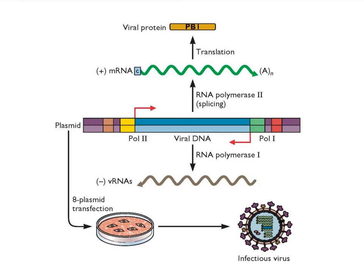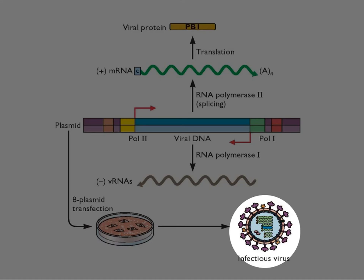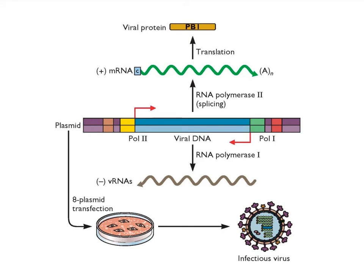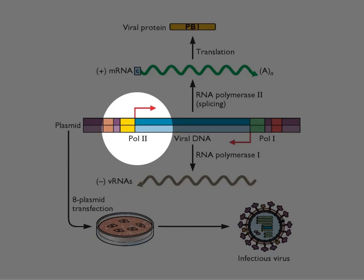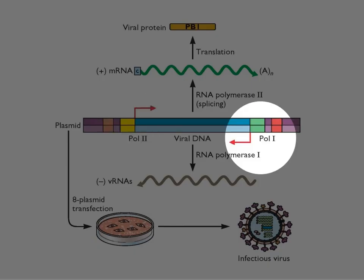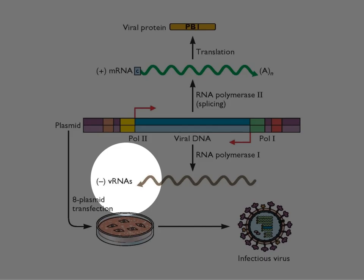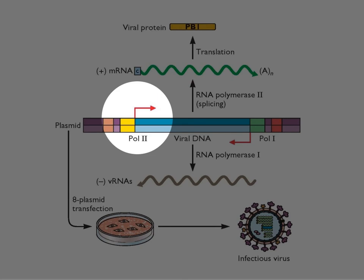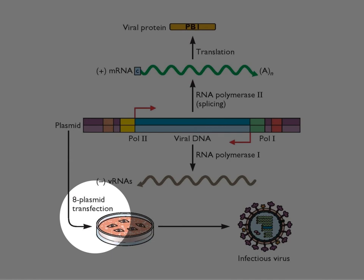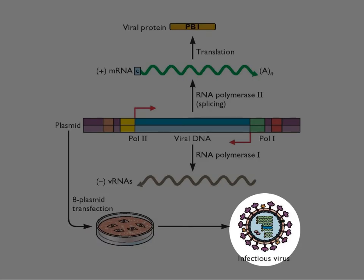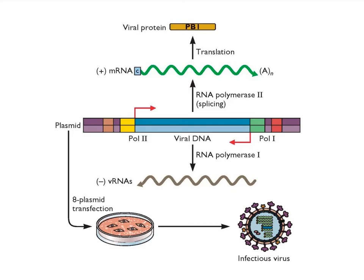For influenza virus, which has eight RNA segments, you make a plasmid for each of the eight segments. These plasmids are cleverly made with two promoters: a Pol-2 promoter going in one direction and a Pol-1 promoter going in the other. When you put this plasmid into a cell, it goes into the nucleus. Pol-1 makes the viral RNAs, which are negative strand; Pol-2 makes mRNAs, which make proteins. So you take eight plasmids, put them in a cell, and get influenza virus out — you can recreate any influenza virus you want.